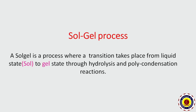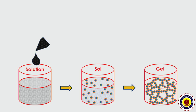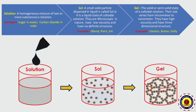Let us observe what the sol-gel process is. A sol-gel is a process where a transition takes place from liquid state to gel state through hydrolysis and polycondensation reactions. The transformation from solution to sol and into gel is depicted here.